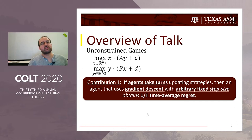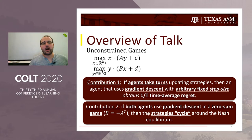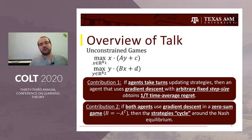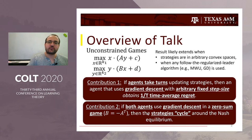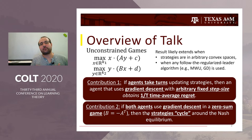Moreover, we'll also study this system from a dynamics perspective, specifically in zero-sum games. We'll show that if both agents use gradient descent, the strategies will actually cycle around the Nash equilibrium. We're going to establish these results by relating the problem to physics, and this relationship will help us extend the results to a variety of other settings.